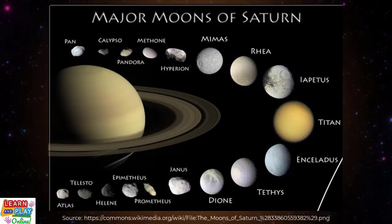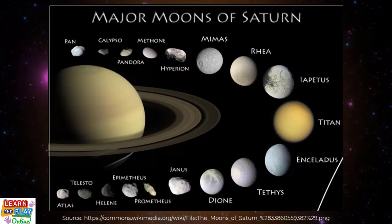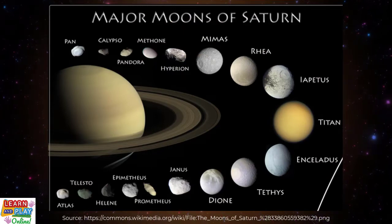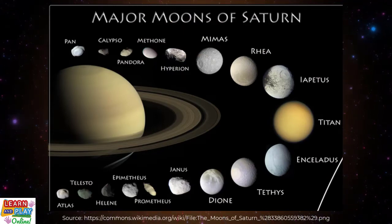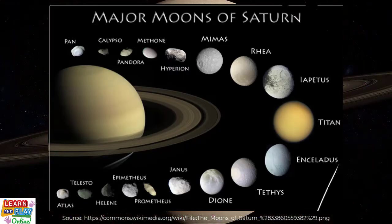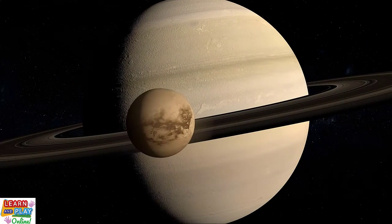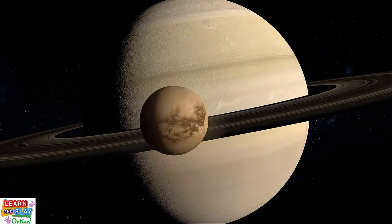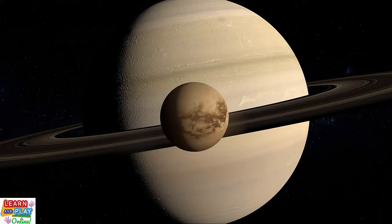From the date of which this video was published, Saturn has a staggering 146 moons, giving it the title of the planet that has the most moons. The largest moon that orbits Saturn is called Titan. Who knows just how many more will be discovered in the future?